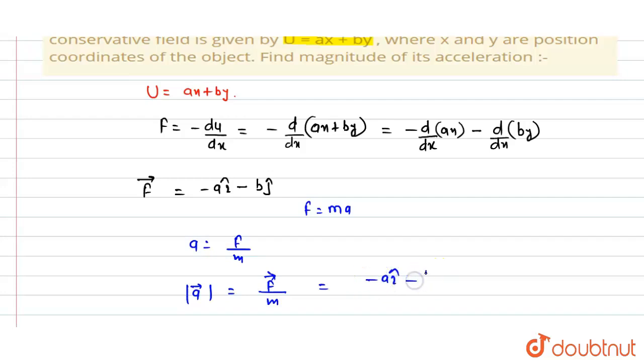Its magnitude divided by m. If we take the magnitude, this value comes out to be square root of a squared plus b squared, divided by m.